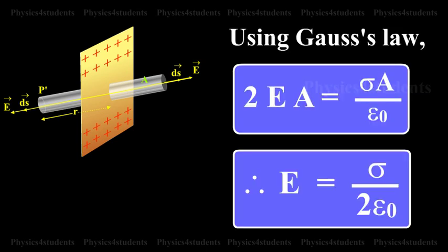Using Gauss's law, 2 E A equals sigma A over epsilon naught. Therefore, E equals sigma over 2 epsilon naught.